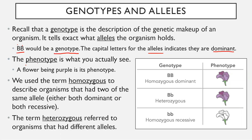Now the phenotype is what you actually see. I always remembered it by saying phenotype starts with 'ph', kind of like the word photo — and a photo is something you see. So phenotype is what you actually see. For example, a flower being purple — that's a phenotype. You're making an observation; you're looking at the flower and saying that's a purple flower, therefore it's a phenotype.